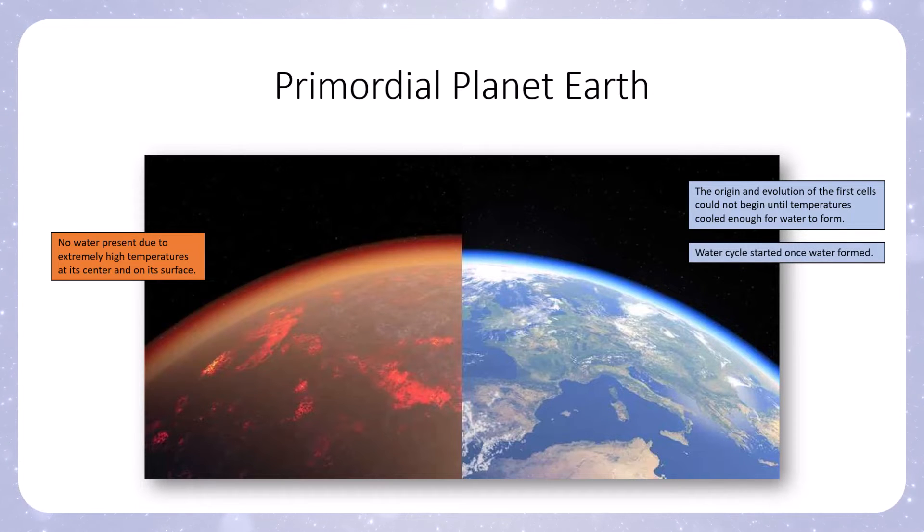Once that water formed, the water cycle had to start. Once that water cycle started, it was maintained to allow water to form gas, liquid, and solid, and to have sufficient temperatures to cause those water molecules to transfer between those phases, which gives rise to different properties that we now take advantage of on planet earth.